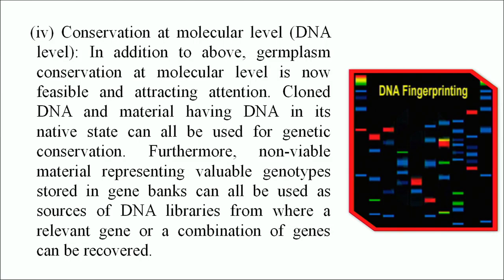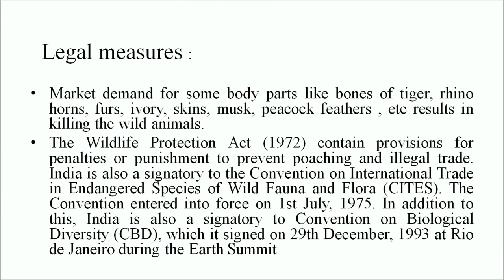Conservation at molecular level: germplasm conservation at molecular level is known to be feasible. Cloned DNA and material having DNA in its native state can be used for genetic conservation. Non-viable material representing valuable genotypes stored in gene banks can be used as sources of DNA libraries from where relevant genes or combinations of genes can be recovered. Legal measures: market demand for some animal body parts like tiger bones, rhino horn, fur, ivory, skin, musk, and peacock feathers results in killing wild animals.